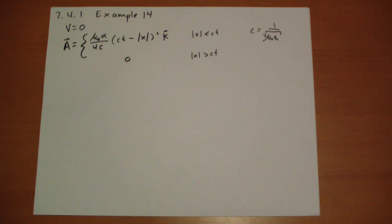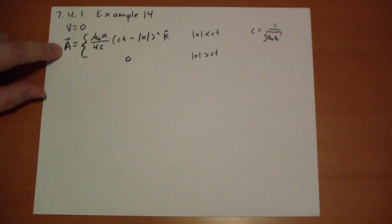Example 14 gives us the potentials V and A. We're supposed to calculate the electric and magnetic fields, and then figure out what the charge and current distributions are that would give us these potentials.